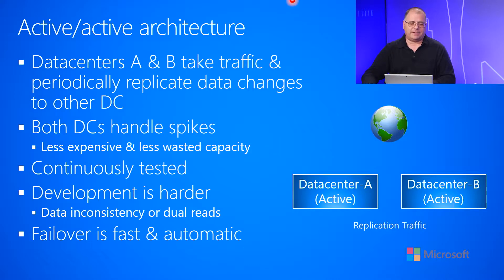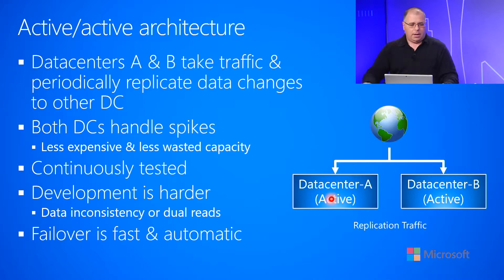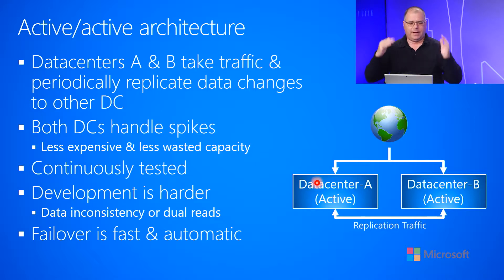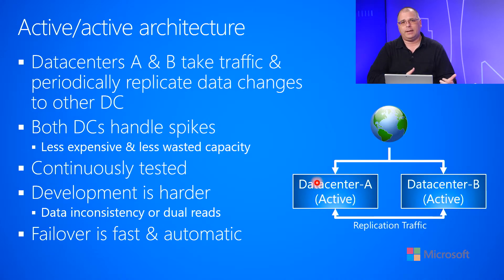Now let's talk about the active-active architecture. In this architecture, data centers A and B are both active, which means they're both willing to accept traffic from the internet — some traffic goes to A, some goes to B. What happens in A will periodically replicate to B, and what happens in B will periodically replicate to A. Both data centers handle traffic spikes, so you can run them both with less capacity — it's cheaper in aggregate with less wasted space, making it a more efficient way to run the service.